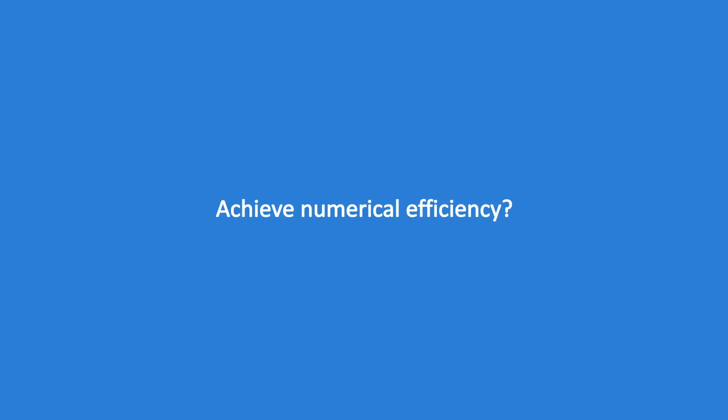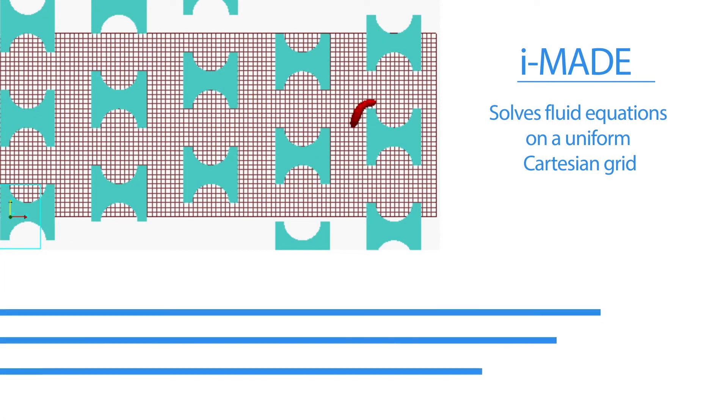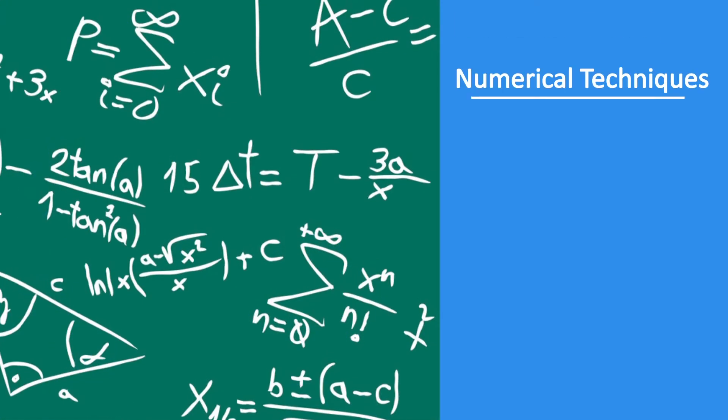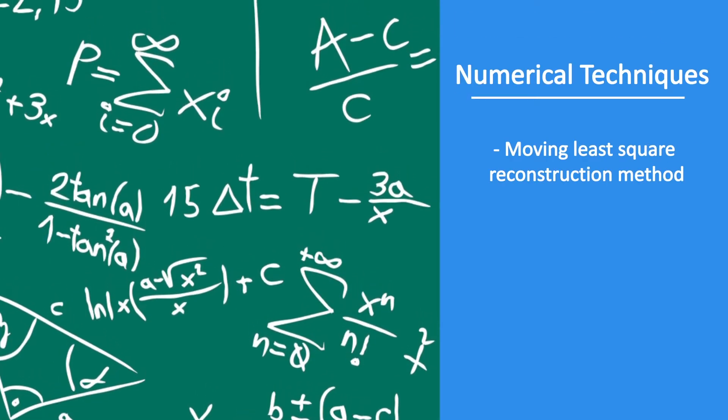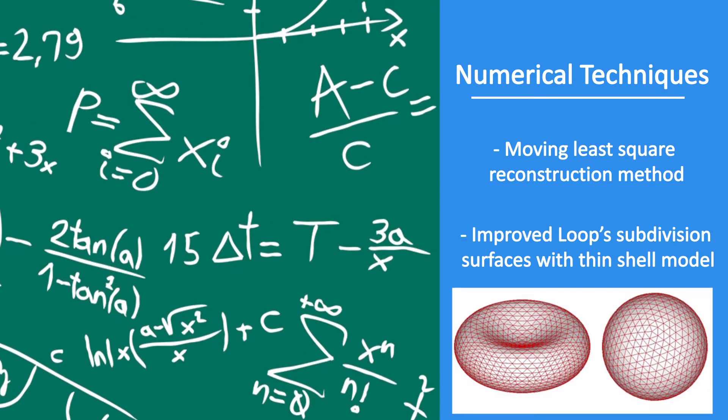To achieve numerical efficiency, iMADE solves fluid equations on a uniform Cartesian grid, as well as adoption of special numerical techniques such as moving least-square reconstruction method and improved loops subdivision surfaces with thin-shell models.